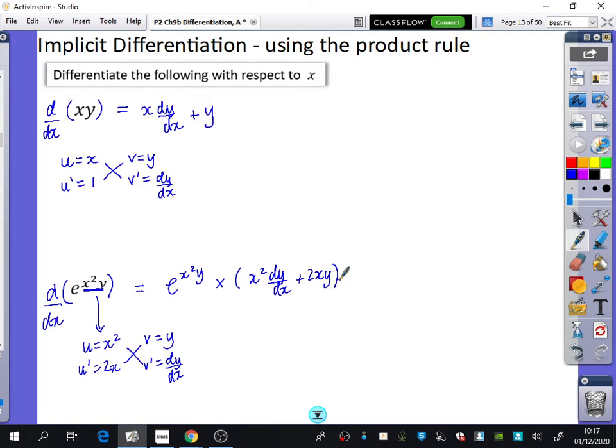So that was a chain rule and a product rule combined together. And if I were to write that in a different way, I would probably start with my x squared dy/dx plus 2xy brackets e to the x squared y like this.